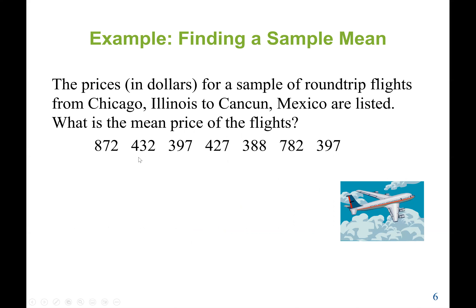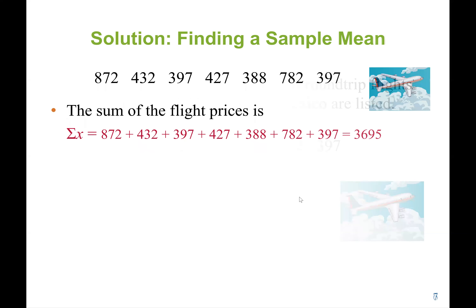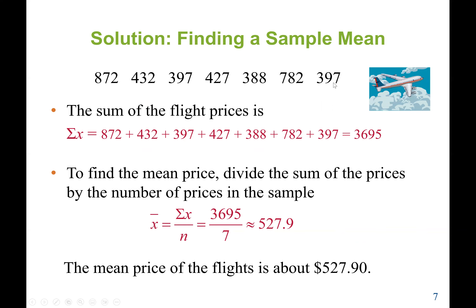Here we have flight prices: 872, 432, 397, 427, 388, 782, 392. To find the mean price of the flights, we add all the values and divide by the number of flight prices. Adding all the values gives us 3,695. We divide by 7, the number of flight prices, so the mean is $527.90. The sample size is the number of flight prices we have.